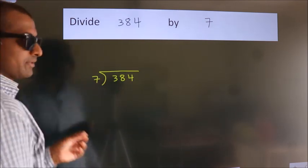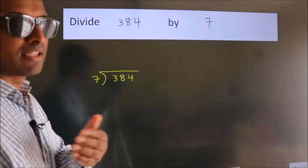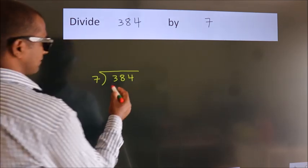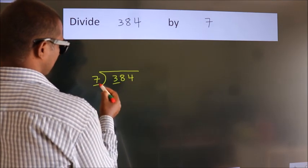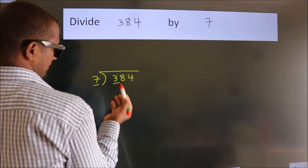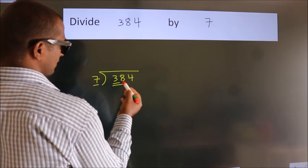This is your step 1. Next, here we have 3, here 7. 3 is smaller than 7, so we should take two numbers, 38.